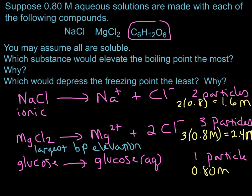Which one of these would elevate the boiling point the least? And I know the question didn't ask that, but let's go ahead and answer. Well, if magnesium chloride breaks up into three particles, sodium chloride breaks up into two. So that's intermediate, but glucose only breaks up into one. So we'd have the smallest boiling point elevation with glucose.